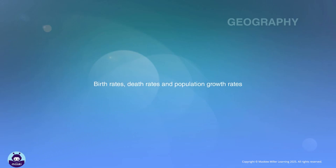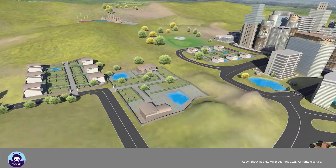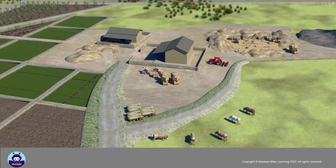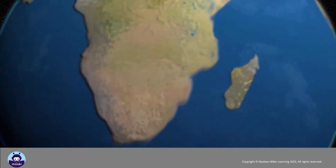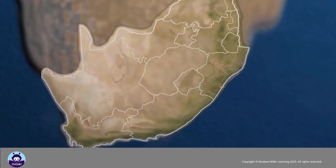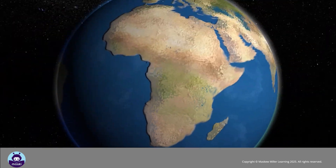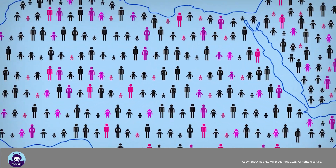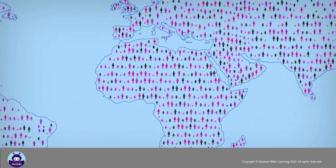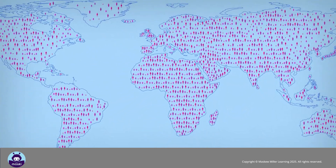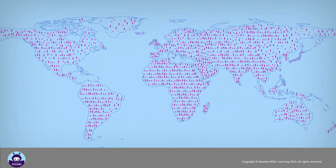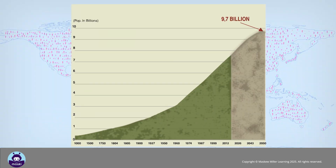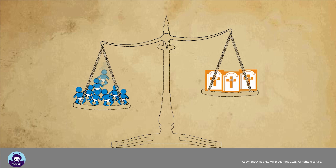Birth rates, death rates, and population growth rates. Population is the number of people living in an area. The area could be a village, a city, a district, a country, a continent, or the whole world. There are now more than 7.4 billion people living on the earth. The earth's population increases by about 75 million people every year. It is estimated that the world population will be almost 10 billion by 2050.